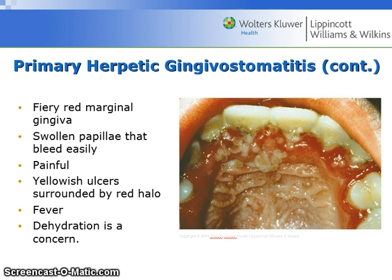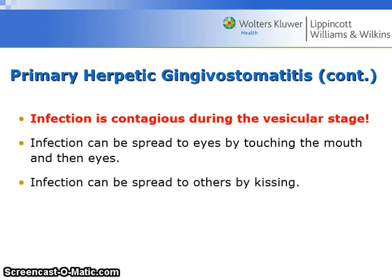In a typical HSV-1 infection in a young child: there is fiery red marginal gingiva, swollen papilla that bleeds easily, and it is painful. Yellowish ulcers are surrounded by a red halo. Fever and dehydration are concerns. This infection is contagious during the vesicular stage and can spread to the eyes by touching the mouth, or to others by kissing.